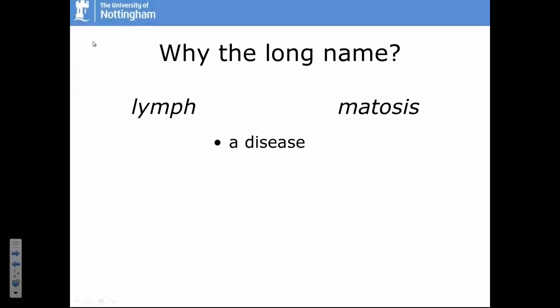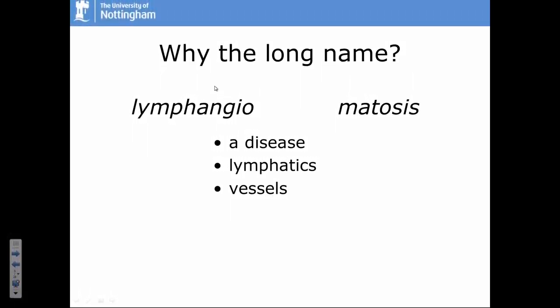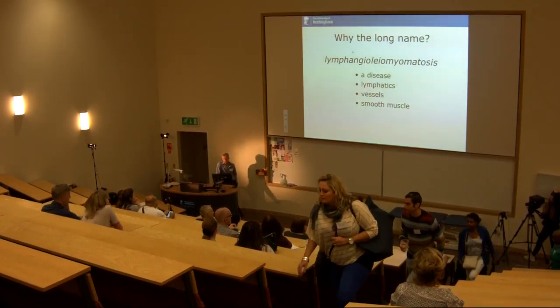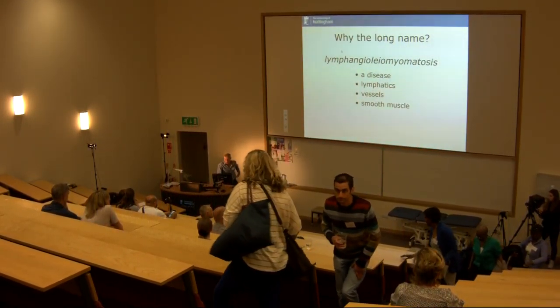I say lymphangioleiomyomatosis and everyone goes 'we can say it,' which is really most of what you need to be an expert on LAM. Why is it such a long word? It means a disease that affects the lymphatic vessels — the 'angio' part — and also in some cases blood vessels, the small vessels in the lungs. 'Leiomyo,' the bit in the middle, refers to the fact that the abnormal cells in LAM that invade the lungs look like smooth muscle type cells. So that gives us lymphangioleiomyomatosis.